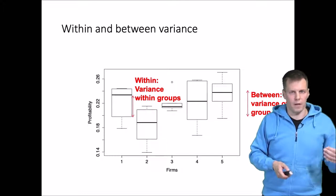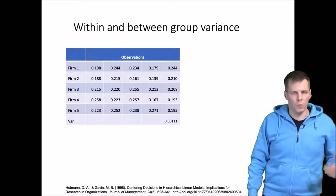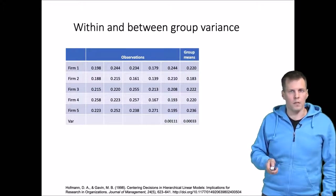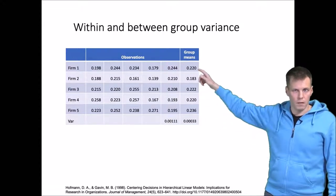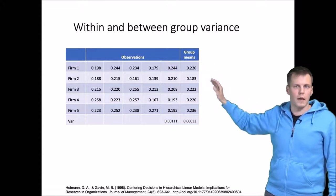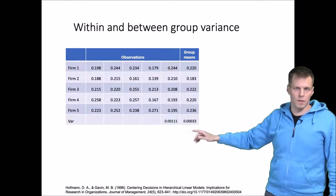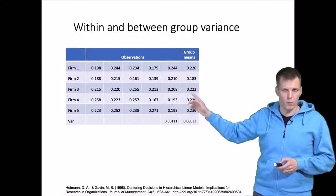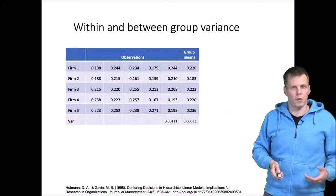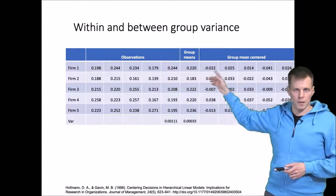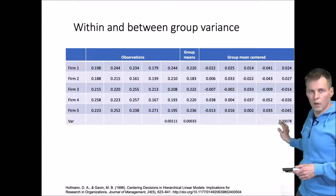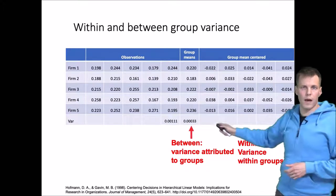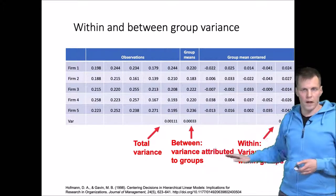We can also quantify the level of variation between two levels numerically by calculating within and between variance. Starting with the data, we calculate group means for each of the five firms and check how much these means vary — that gives us the between variation. Then we calculate how much individual observations vary from the group mean using group mean centering: subtract the group mean from each observation. The variance of these group-mean-centered values is our within variation. The total variation is the sum of between and within variation.